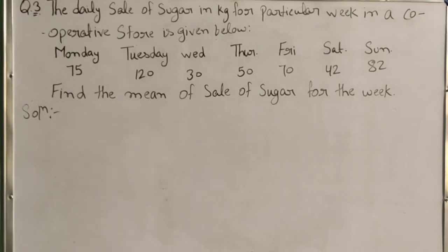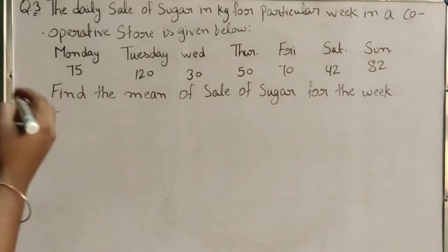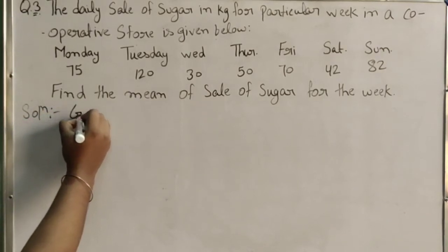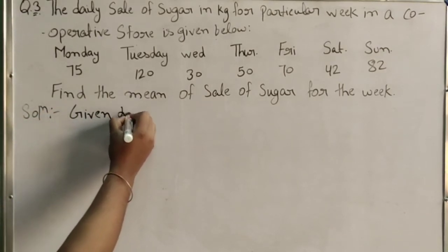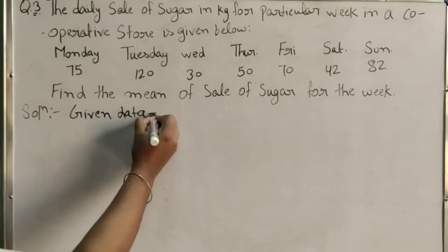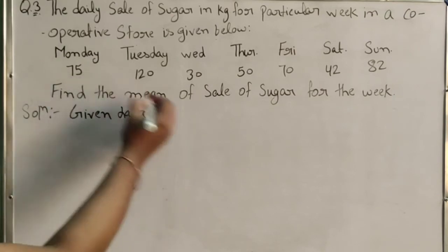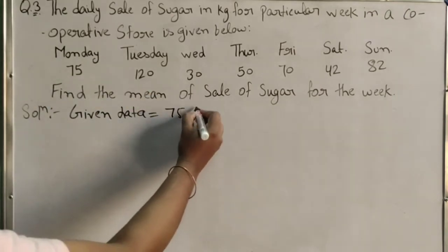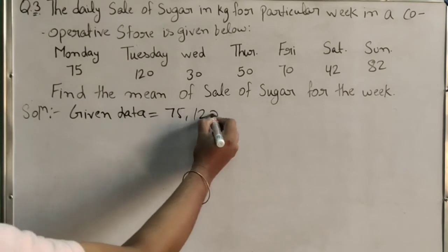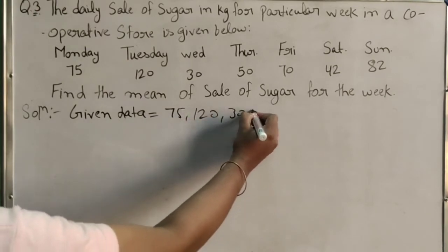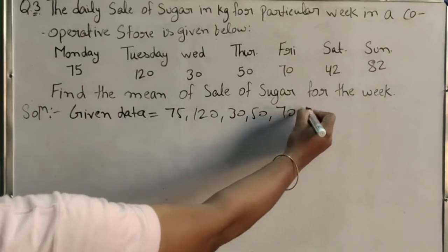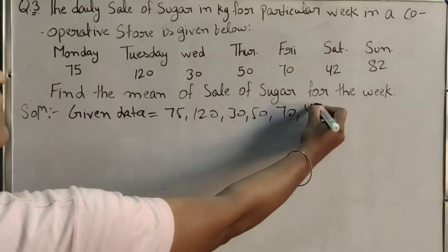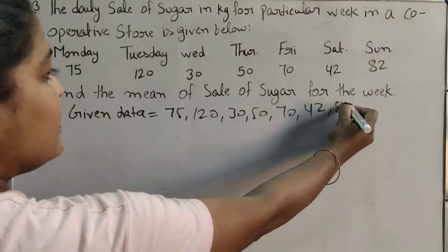आप इसका mean find करो, sale of sugar. तो हमारी पास given data क्या है? Given data: 75, 120, 30, 50, 70, 42, 82.